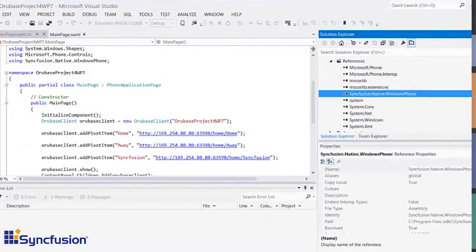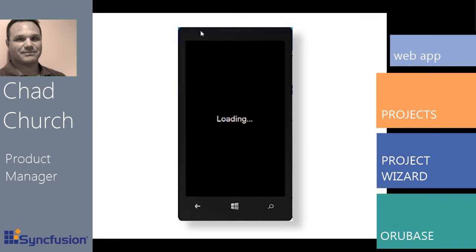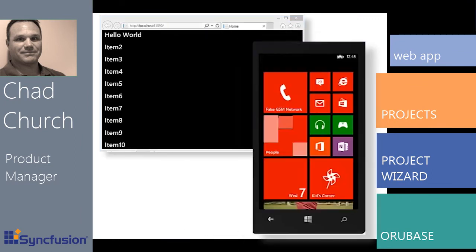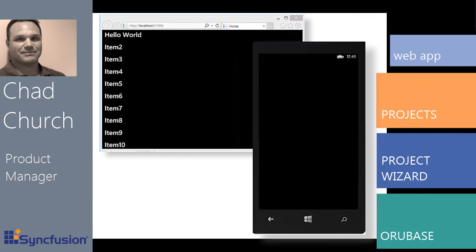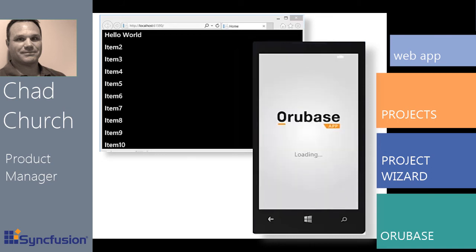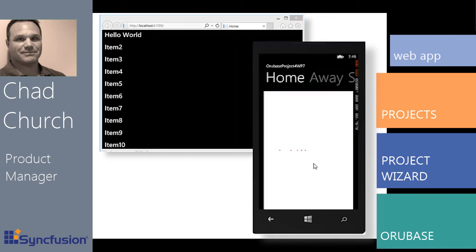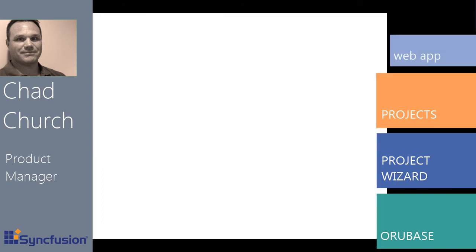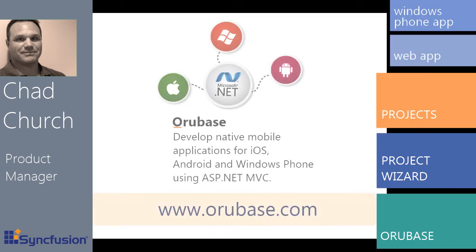Here's the Windows Phone project, and you can see the three pivot items that were created by the wizard. Here's the web page again while the emulator is finishing loading — and here we go, here's our application. You can see I'm pointing to the web page and the projects just worked.